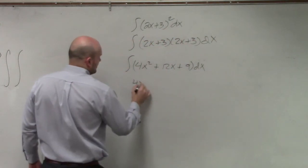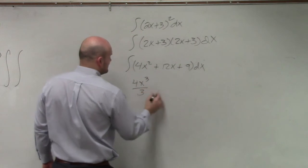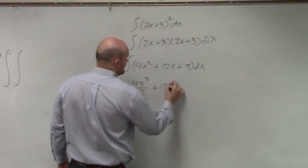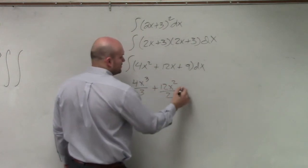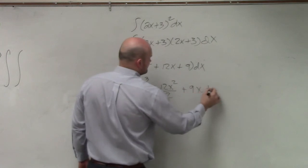So therefore, I have 4x cubed divided by 3 plus 12x squared divided by 2 plus 9x plus c.